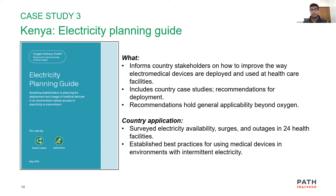Starting from determining how to collect data about a facility's electricity usage and access, the guide then dives into specific recommendations for protecting devices and ensuring efficient deployment given the electricity context of a specific health facility. This guide can be taken from a macro level — how should Ministry of Health stakeholders collect data about electricity across health facilities — down to the micro level, specifying interventions particular facilities need to ensure they can deploy their devices well and efficiently.